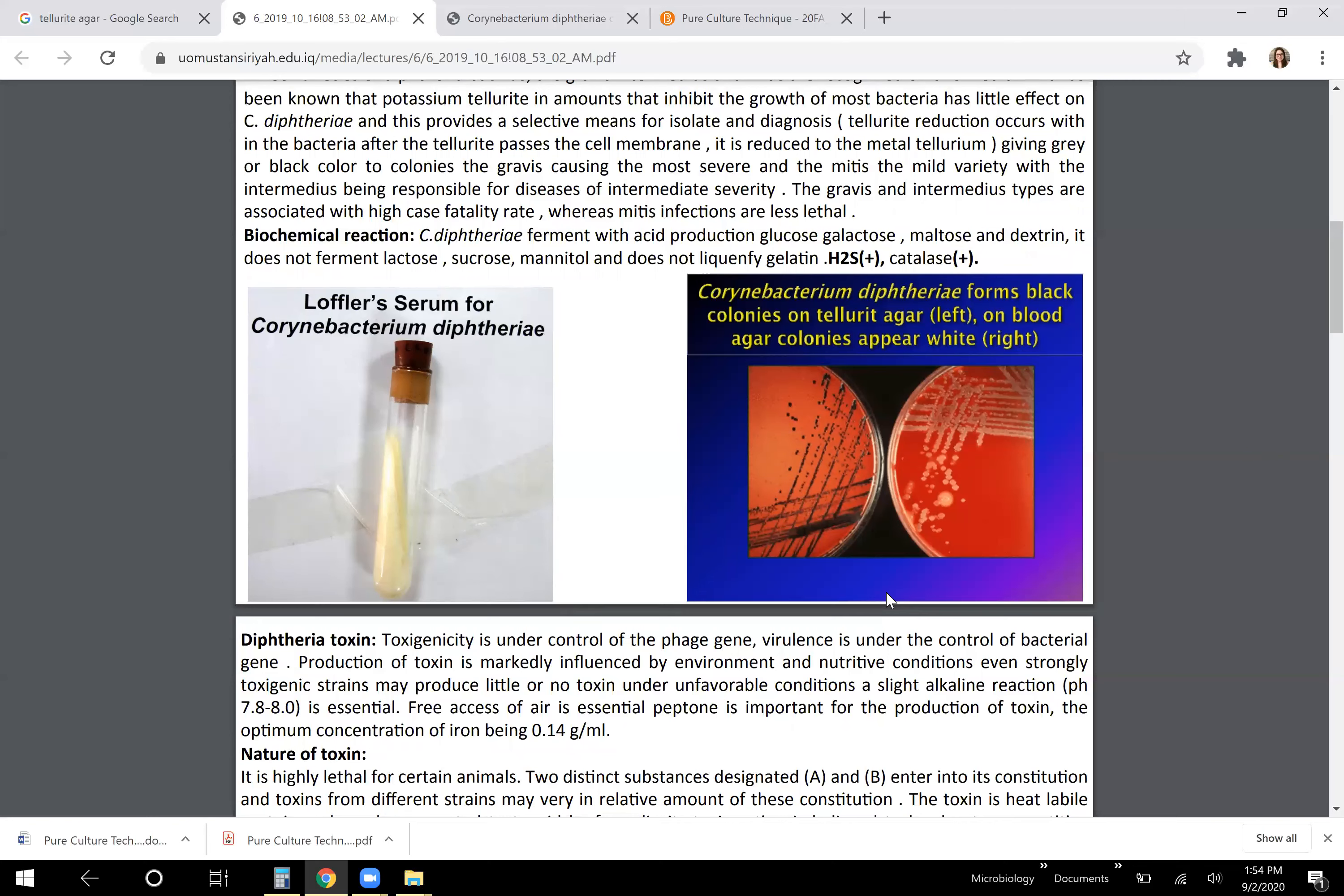These types of media are not differential. Another example of differential media that you may encounter later in this lab is Simmons citrate agar. It turns a color based on the pH of the agar. So if the bacteria are producing base or producing acid as a waste product, it will change the pH of the media they're growing on and thus change the color of the media.